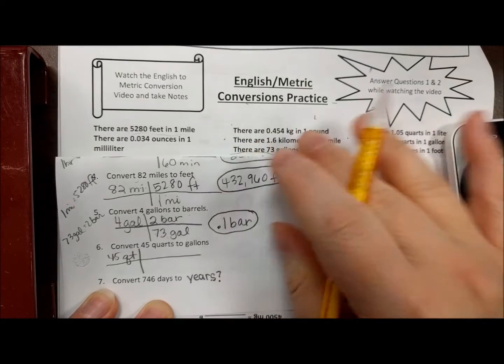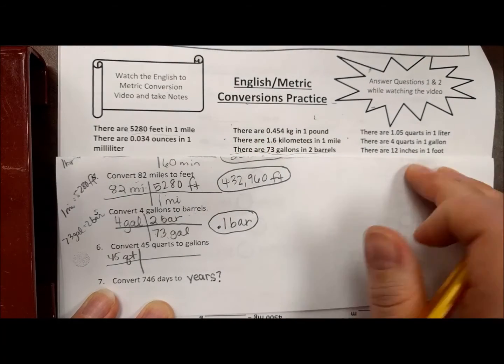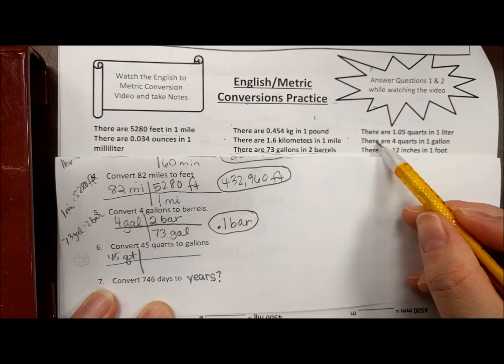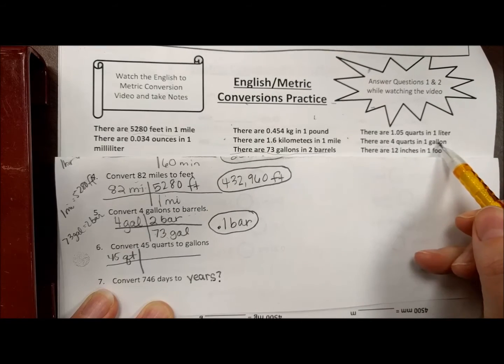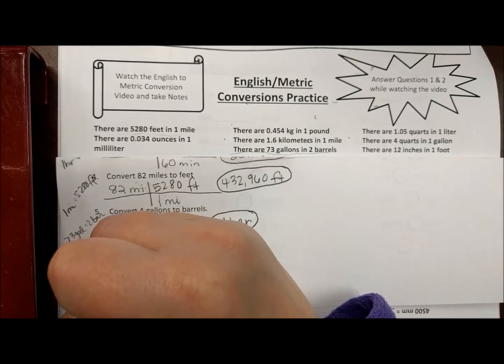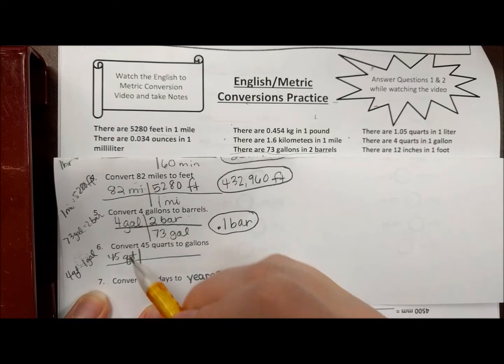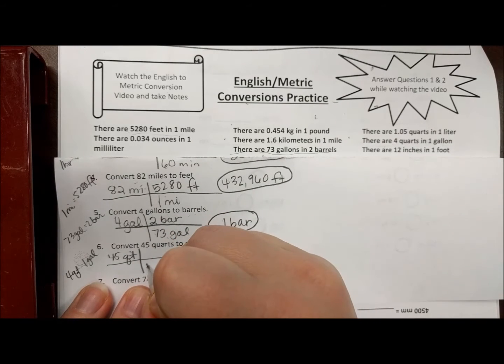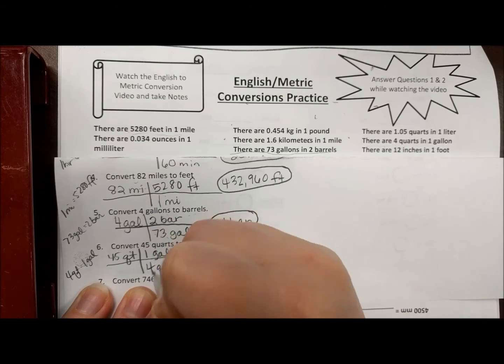Now quarts to gallons—you may know this conversion, you may not. So let's look: we have there are four quarts in one gallon. So diagonals have to match, so my four quarts goes here, my one gallon goes up here.